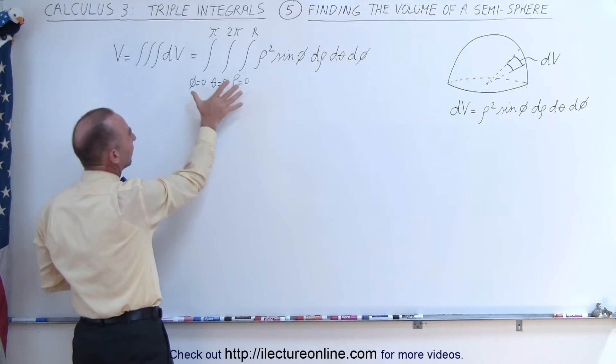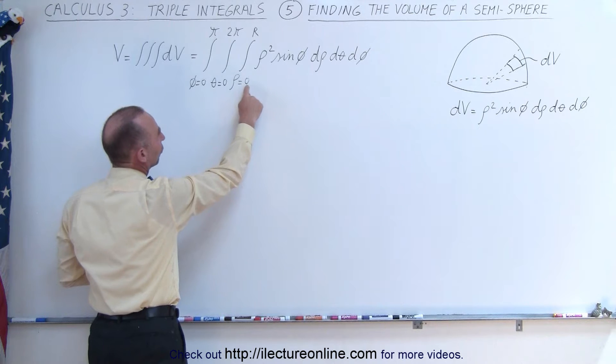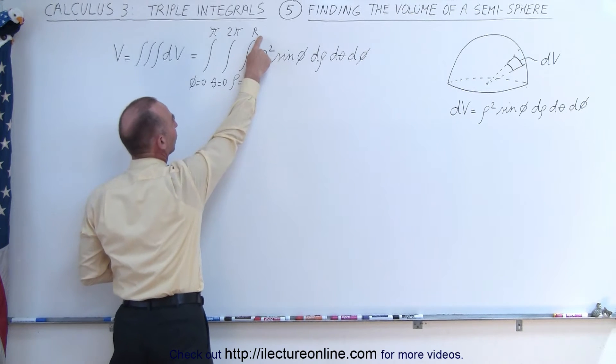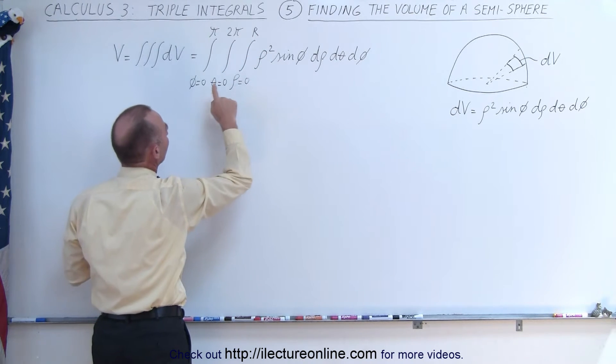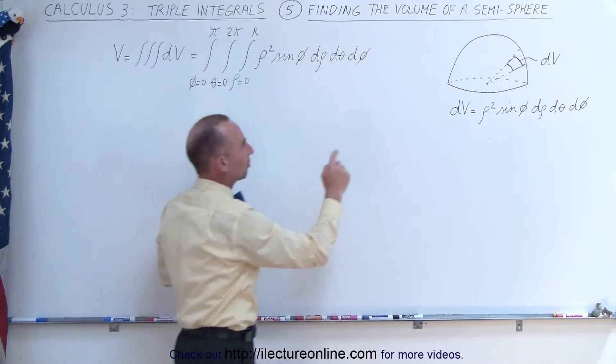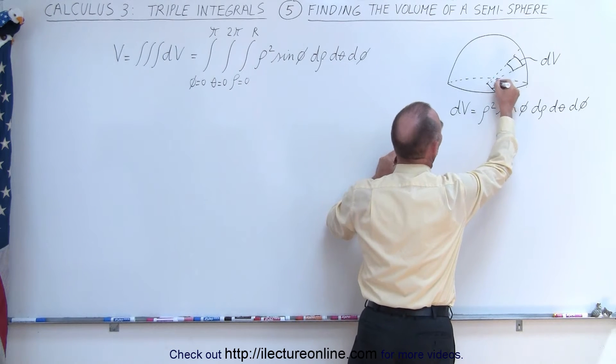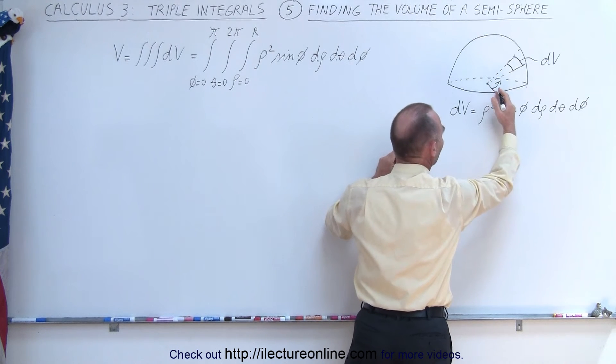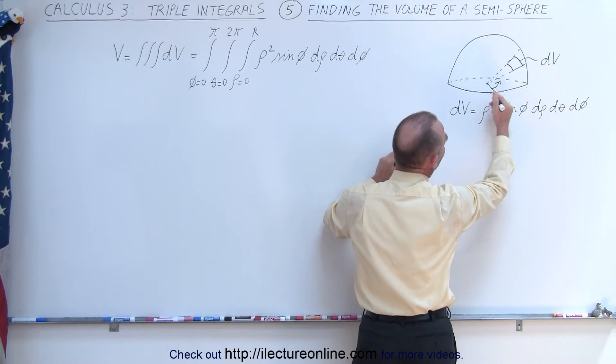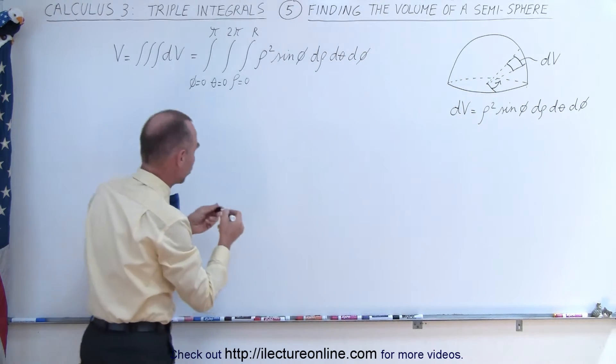And now we need to also find the limits of integration. For the radius from the center to the edge, it's going to be from zero to the radius of the semi-sphere. For theta, it's going to be all the way around 360 degrees, so the angle theta is defined as the angle relative from a vantage point, typically the y-axis or the x-axis, depending upon which one you want to choose.